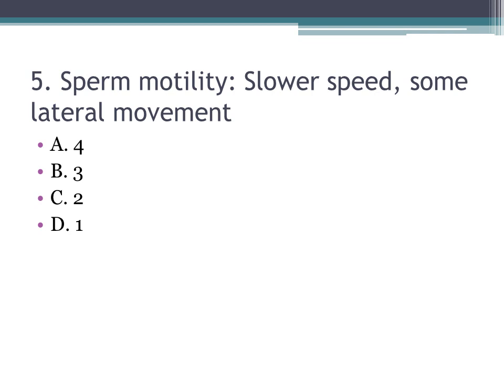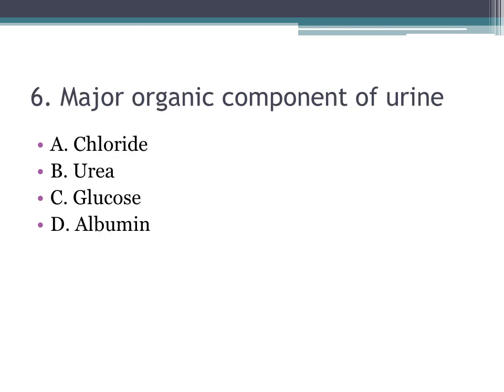Number five: sperm motility — slower speed, some lateral movement — A. 4, B. 3, C. 2, D. 1. Recall January 2021. The correct answer is B, 3. Mnemonic: three S's — slower speed, some lateral movement. Grade 2 is slower forward progression with noticeable lateral movement. Grade 4 is rapid straight-line motility. Grade 1 is no forward progression.